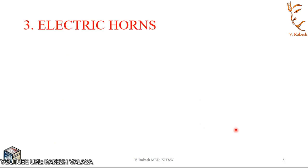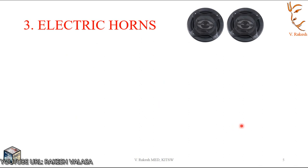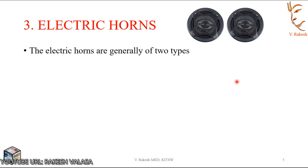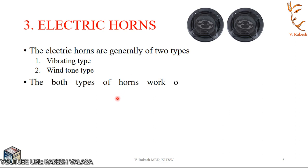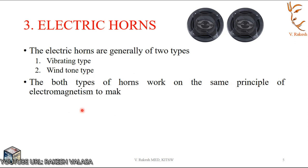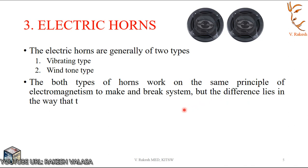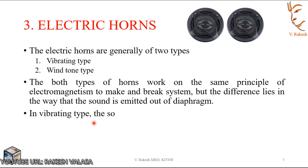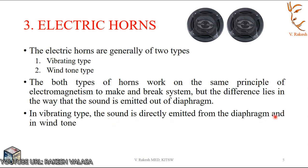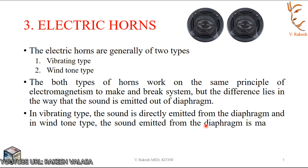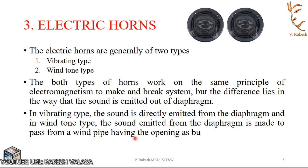The third type is the Electric Horn. Electric horns are basically divided into two types: one is the vibrating type and another is the wind tone type. Both types of horns work on the same principle of electromagnetism — a make and break system. The difference lies in the way that the sound is emitted from the diaphragm. In the vibrating type, the sound is directly emitted from the diaphragm. In the wind tone type, the sound emitted from the diaphragm is made to pass through a wind pipe having an opening shaped like a bugle.